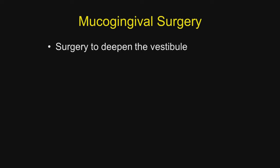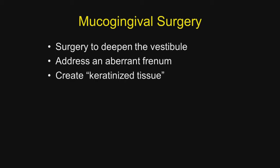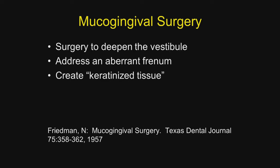Mucogingival surgery focused on three things: surgery to deepen the vestibule, to address an aberrant frenum, and third, to create keratinized tissue. This was the definition provided by Friedman in the Texas Dental Journal in 1957. Let's take a moment to talk about how keratinized tissue was created in the 1950s.